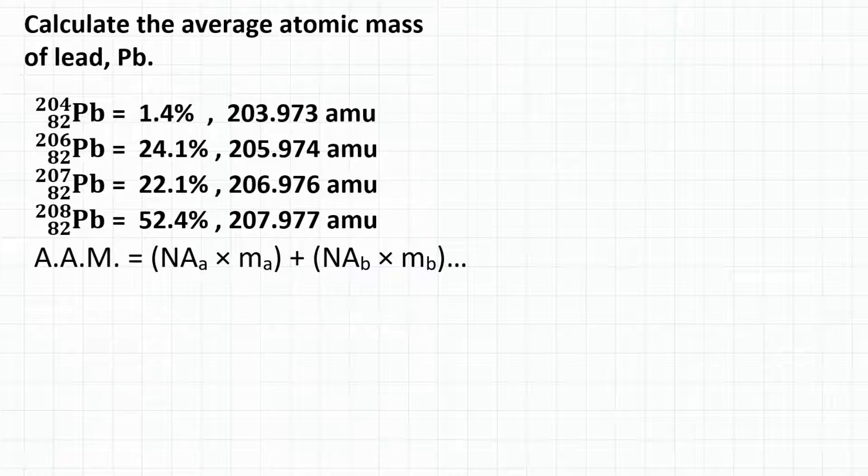We need one, the natural abundance, which we'll abbreviate as NA. Natural abundance is the percentage of all atoms of an element that are a certain isotope. And two, the atomic mass, or the mass of each isotope.